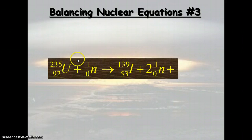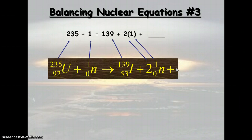Let's look at another example. Here we have a uranium atom, uranium 235, bombarded with a neutron. It becomes iodine 139, gives off two neutrons, and something else. Let's figure out what that other thing is.